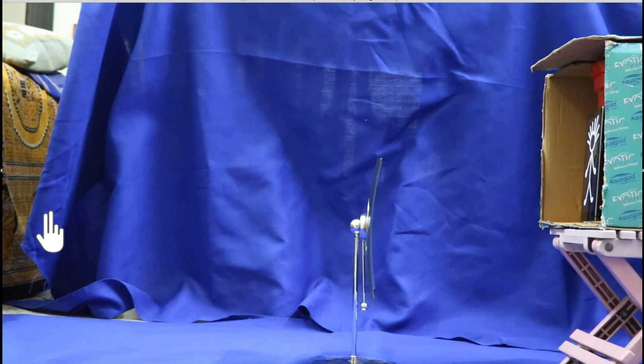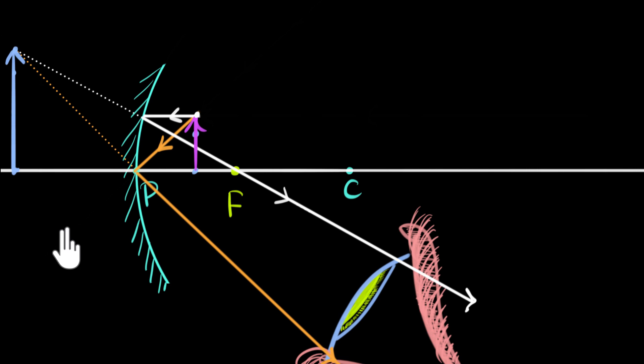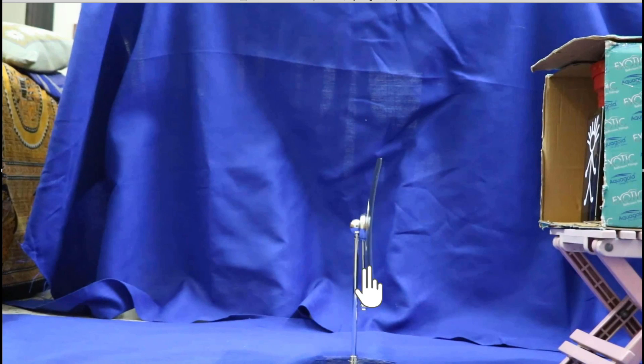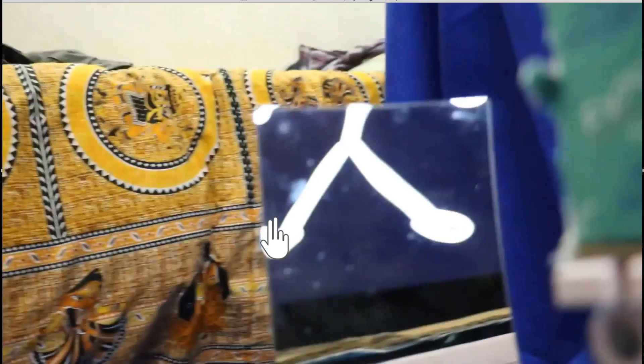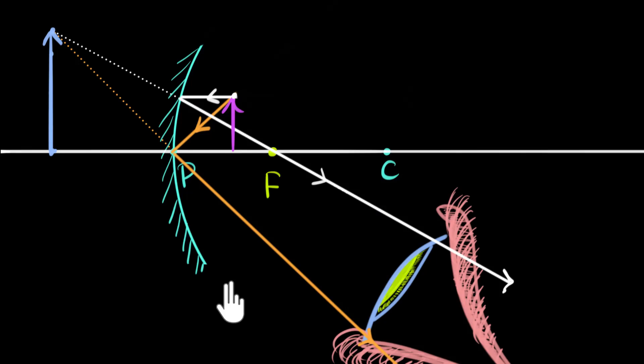With the object brought very close to the mirror inside the principal focus, there is no screen needed. If you directly look into the mirror, you can see a giant virtual image — erect, no longer inverted, and greatly magnified. Concave mirrors can produce magnified virtual images, which is why they're used as shaving mirrors or makeup mirrors. As the object gets closer to the mirror, the image stays virtual but becomes a little less magnified.